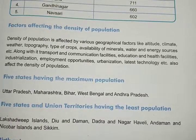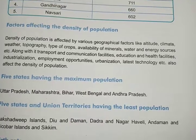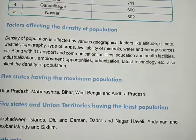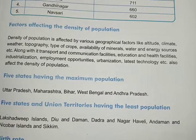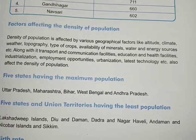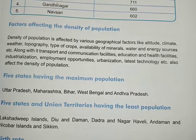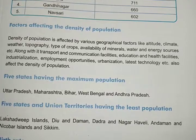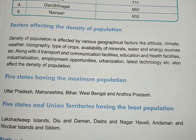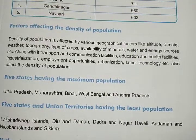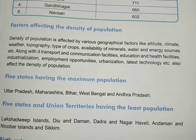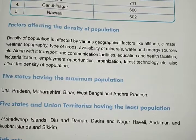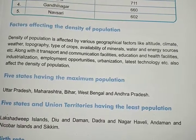There are 5 states that have the maximum population in India: Uttar Pradesh, Maharashtra, Bihar, West Bengal, and Andhra Pradesh. The 5 states and union territories that have the least population are Lakshadweep Island, Diu and Daman, Dadra and Nagar Haveli, Andaman and Nicobar Island, and Sikkim.